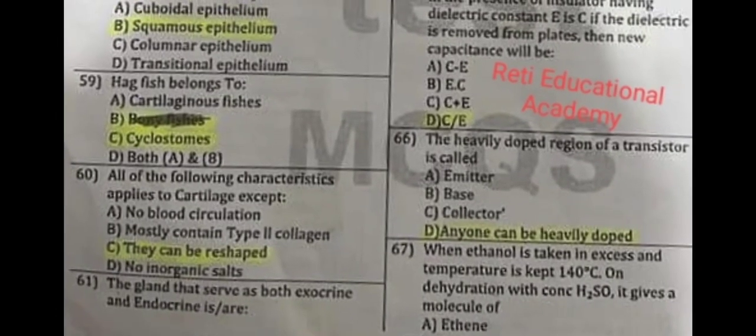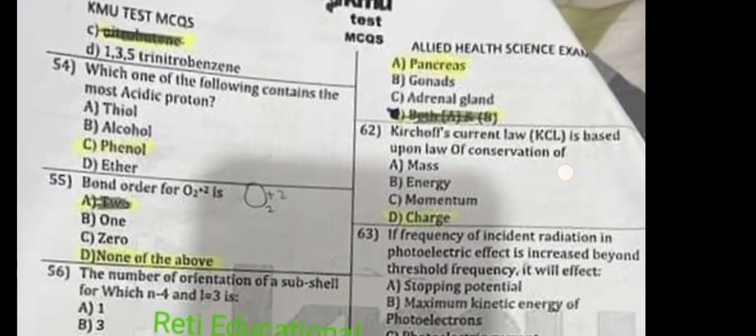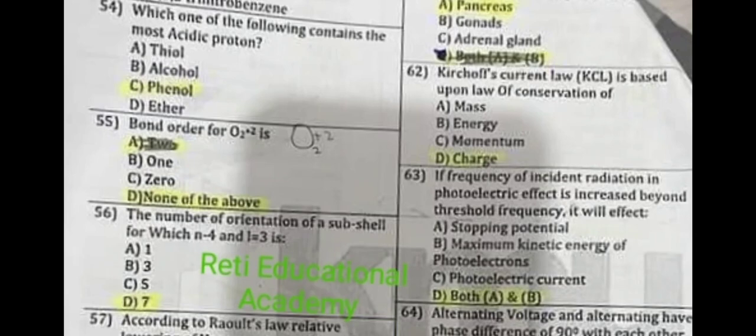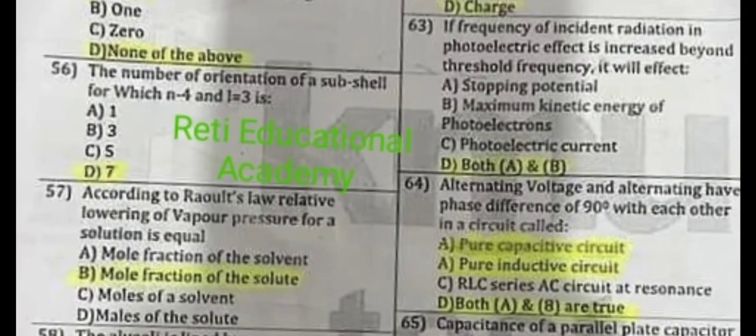Question number 60: All of the following characteristics apply to cartilage except they can be reshaped. Question number 61: The gland that serves as both exocrine and endocrine is the pancreas. Question number 62: Kirchhoff's current law is based on D: the law of conservation of charge.